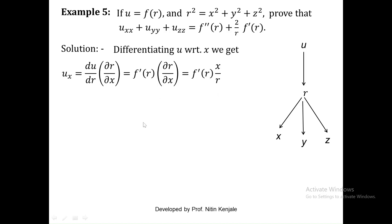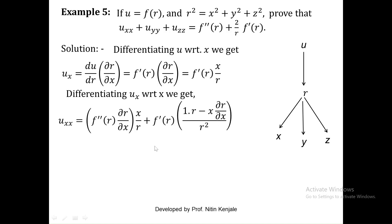Now we differentiate ux one more time with respect to x to get uxx. So uxx is obtained by finding the derivative of f dash of r into x by r with respect to x. Here we have to use the product rule of derivative. We consider f dash of r as u and x by r as v. Let us first find the derivative of f dash of r — it is given by f double dash of r into the derivative of r with respect to x into v as it is, plus the second term where we keep f dash of r as it is and differentiate x by r using the division rule.